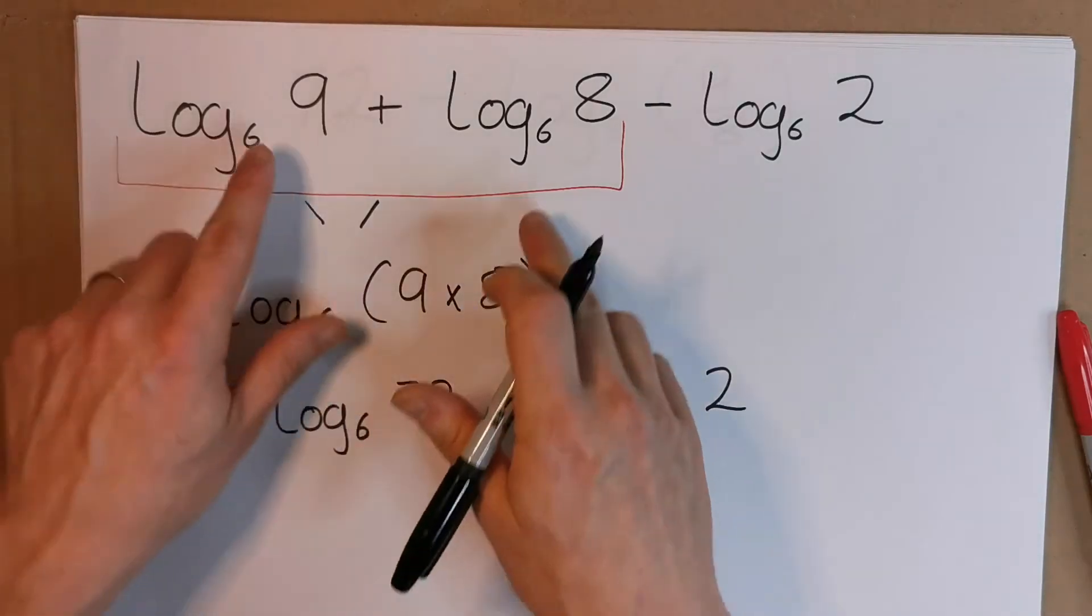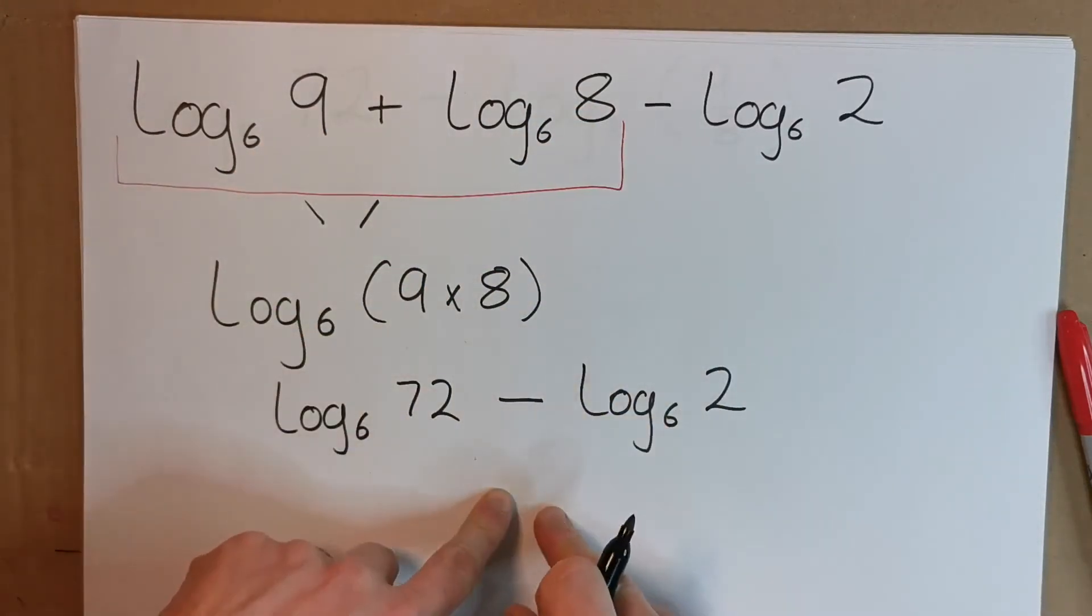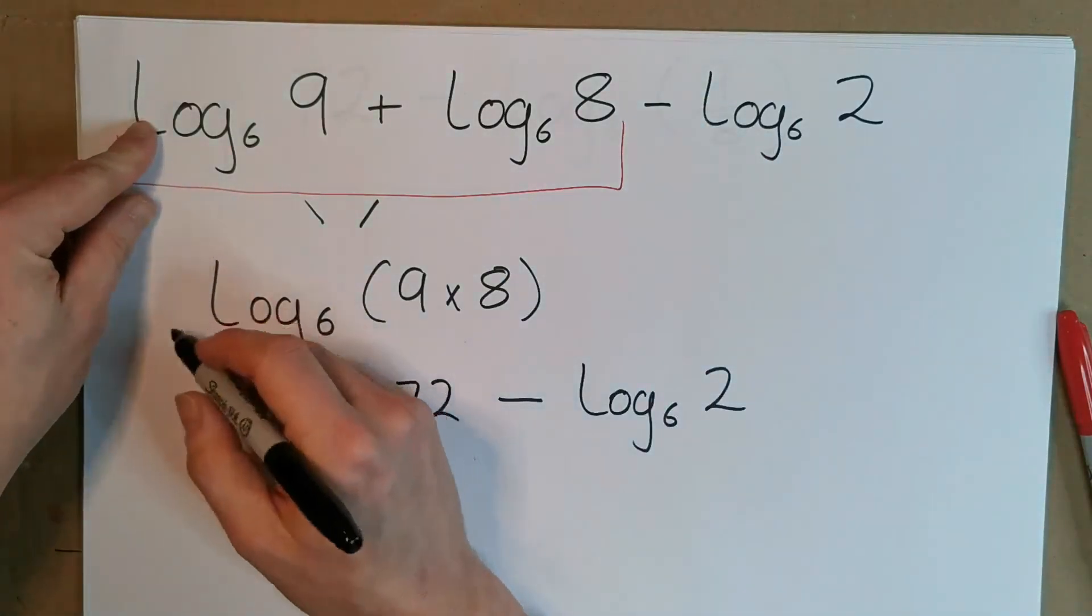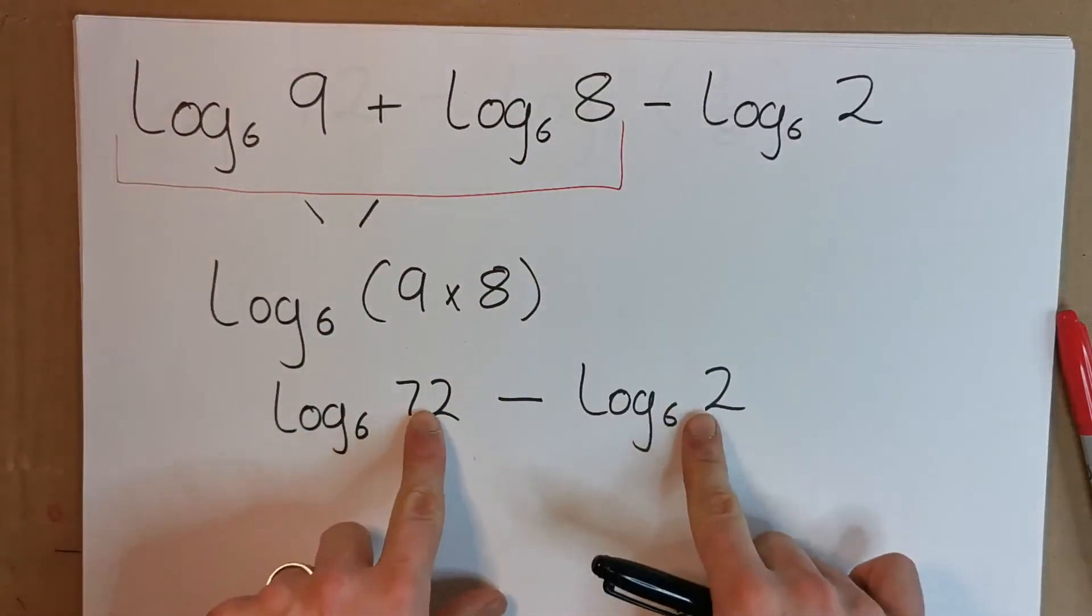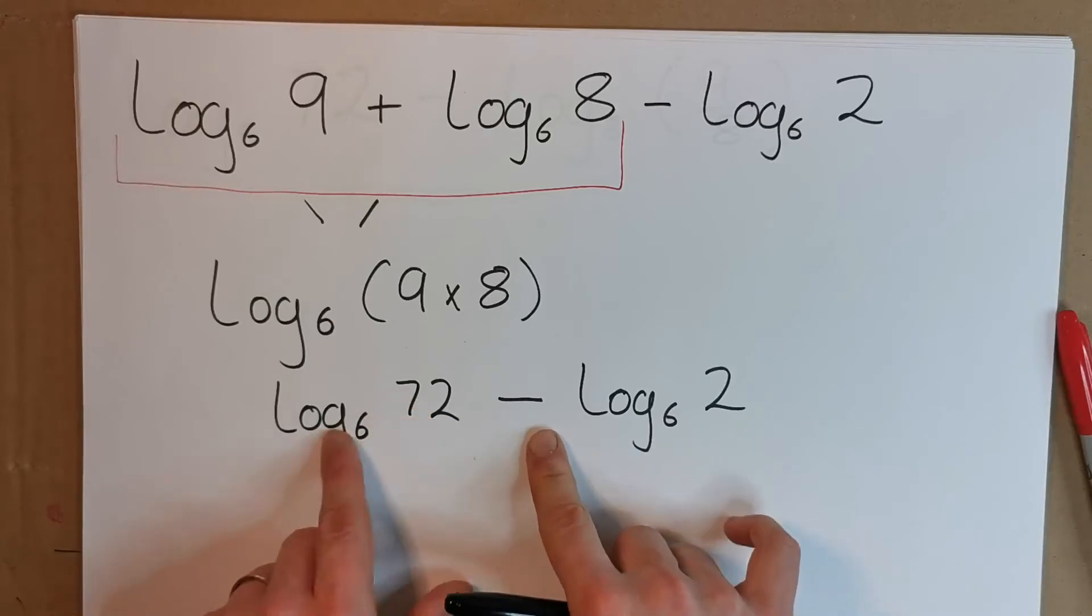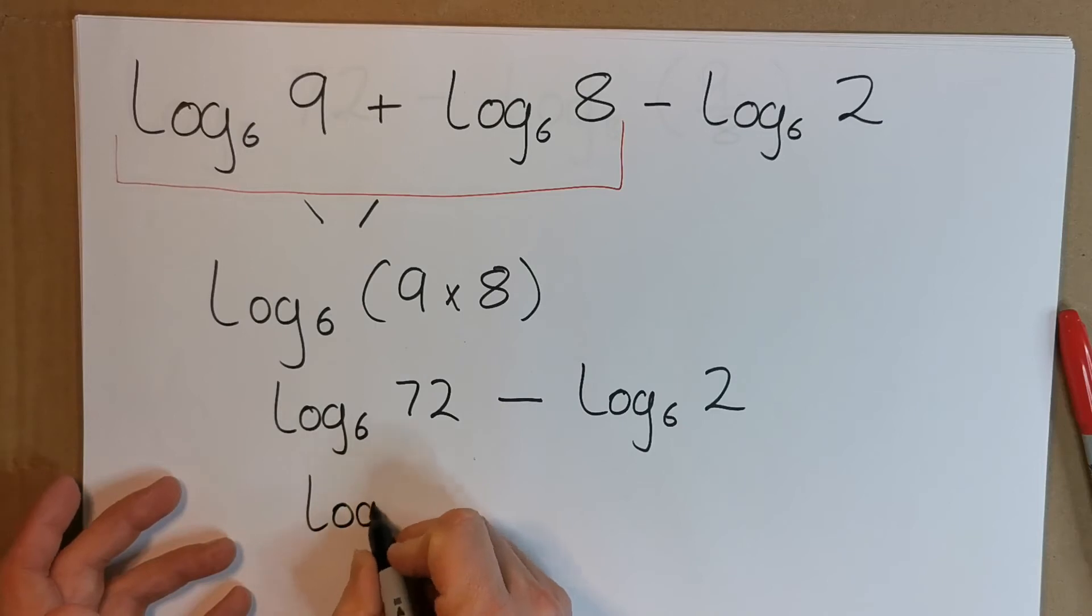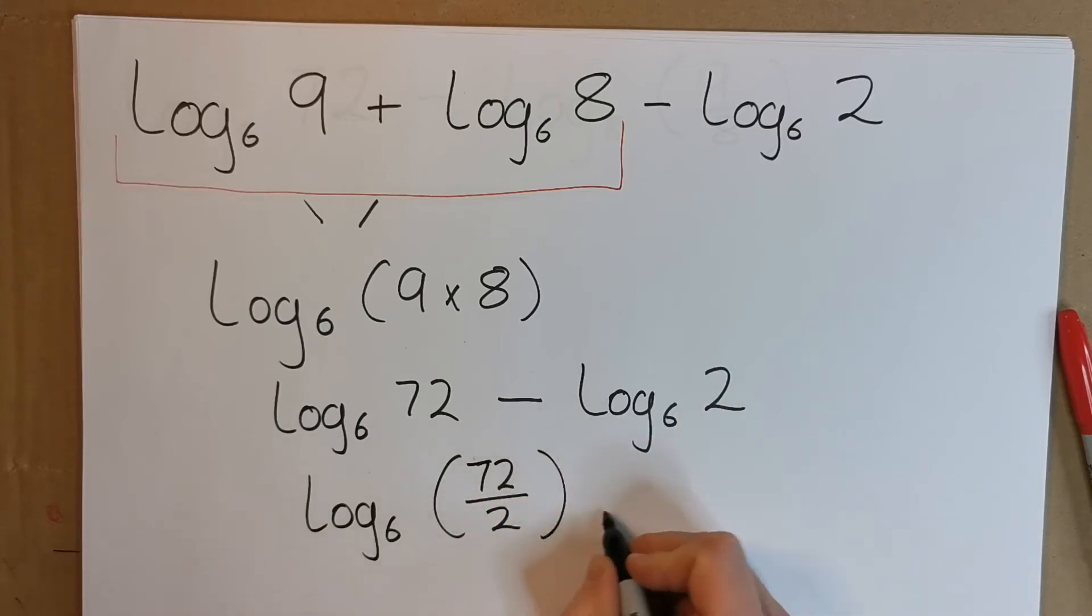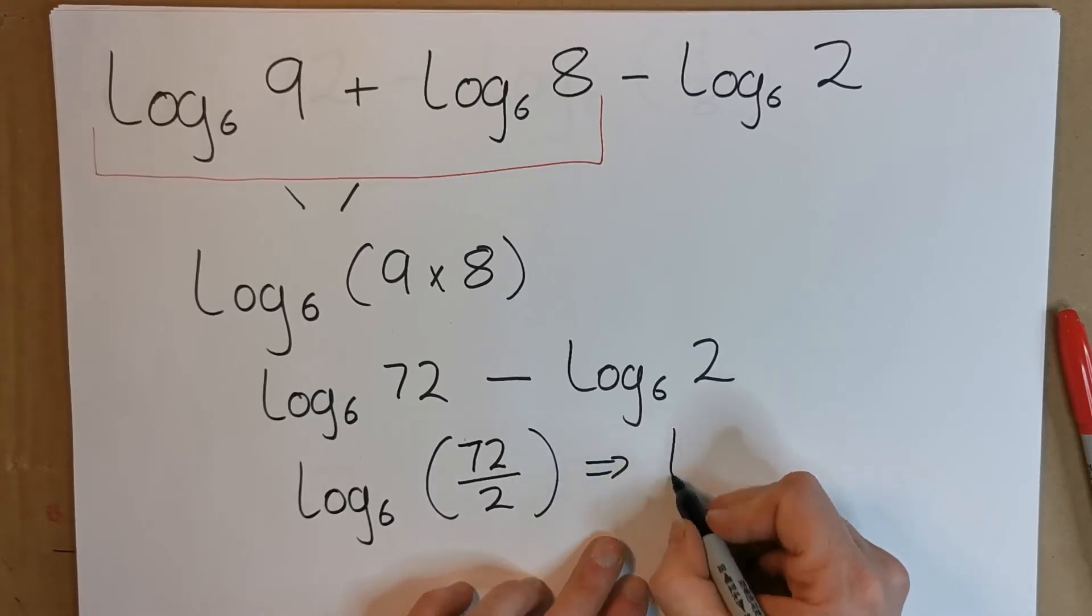Now the way addition brings together to a multiplication, subtraction brings together into division, or division can be split into a subtraction. We brought these two additions together as multiplication, same base, but now we have this subtraction. Log base 6 of 72 minus log base 6 of 2, we bring this together as division: log base 6 of 72 over 2.